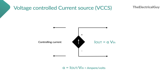So these are the four different types of dependent sources that are theoretically available. I hope this video helped you in understanding the concept in the easiest way. If you find the video helpful, make sure you click on the like button and also subscribe to the channel so that you get notified every time I upload a new video. Thank you for watching — I'll see you in my next one.